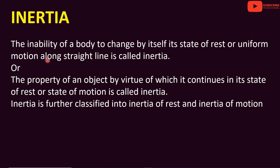From Newton's First Law, we understand that an object in rest or in uniform motion has inertia. There are two types: inertia of rest and inertia of motion.